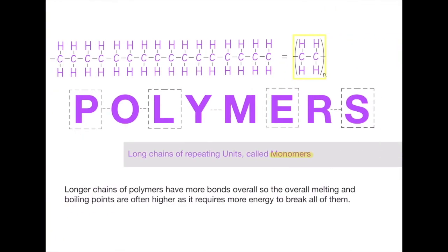Next we have polymers — a word you should definitely be familiar with going into your GCSEs. A polymer is just a long chain of repeating units, and those repeating units are called monomers. The diagram along the top shows effectively what a polymer looks like: a long chain of C's and H's. Longer chains of polymers have more bonds overall, so the melting and boiling points are often higher as it requires more energy to break all of them. This is really crucial — understanding what causes a high melting or boiling point comes down to how many bonds there are.